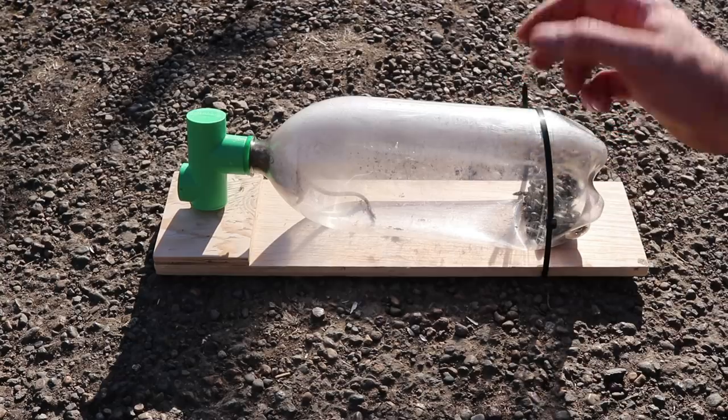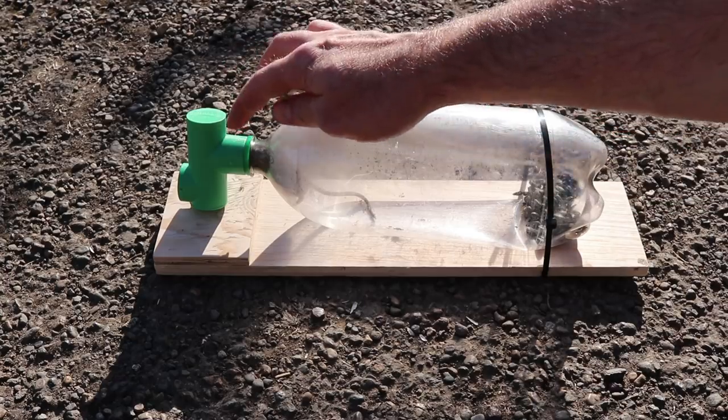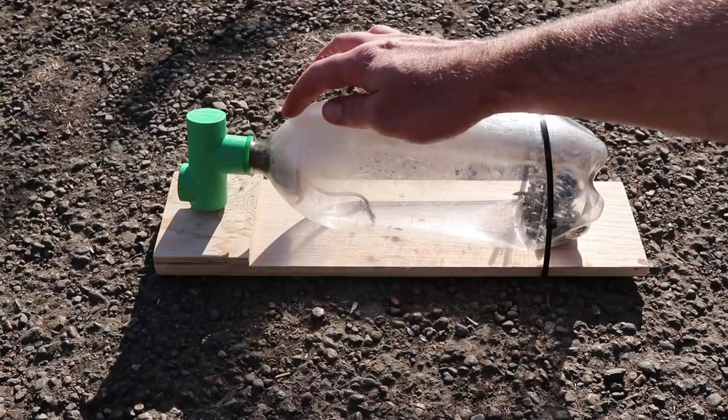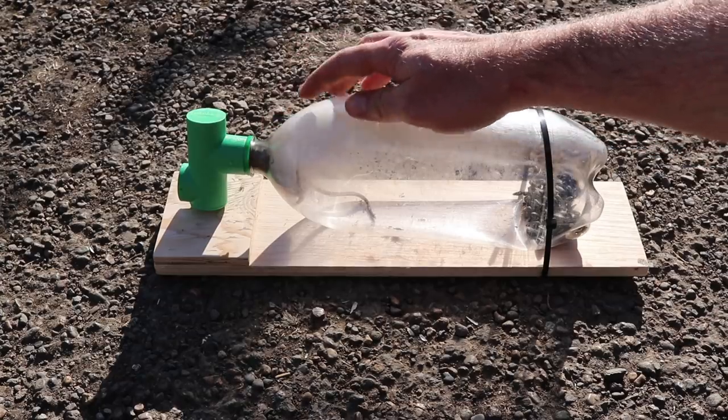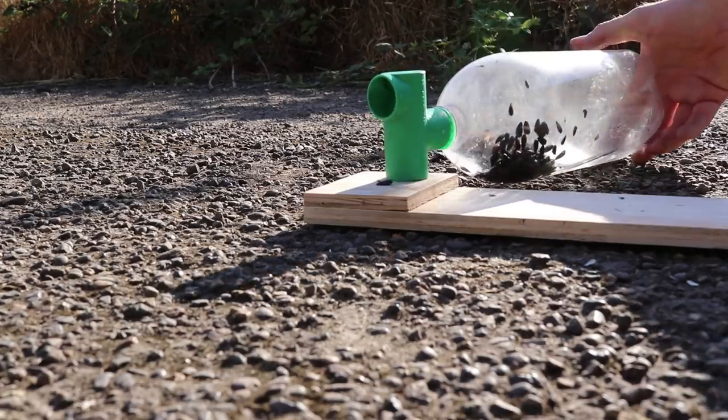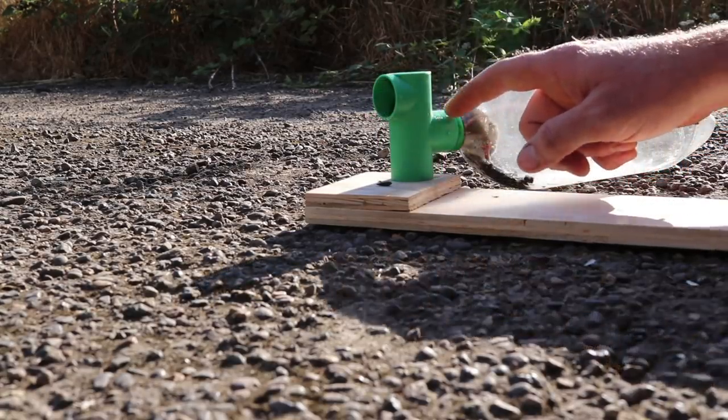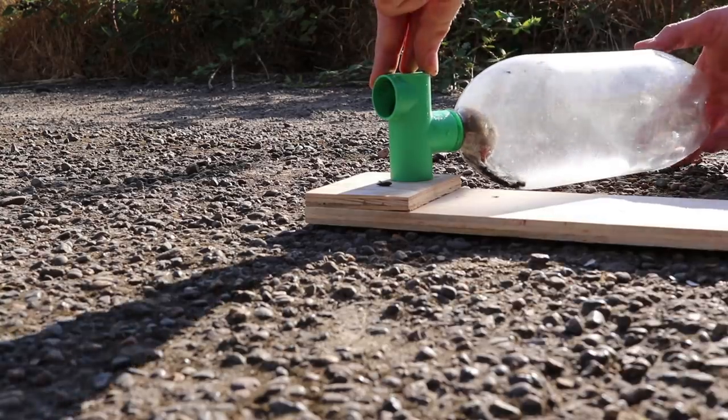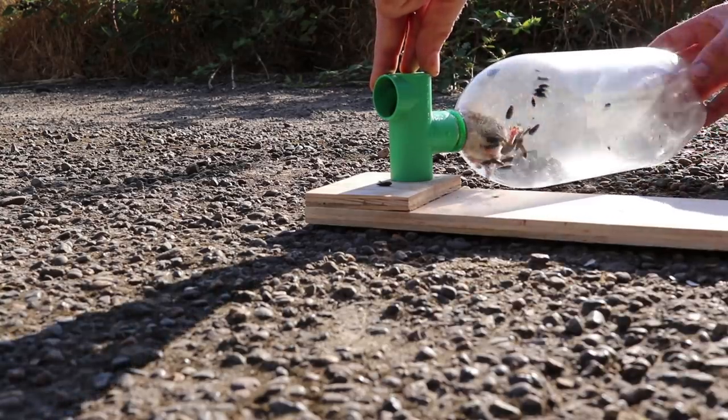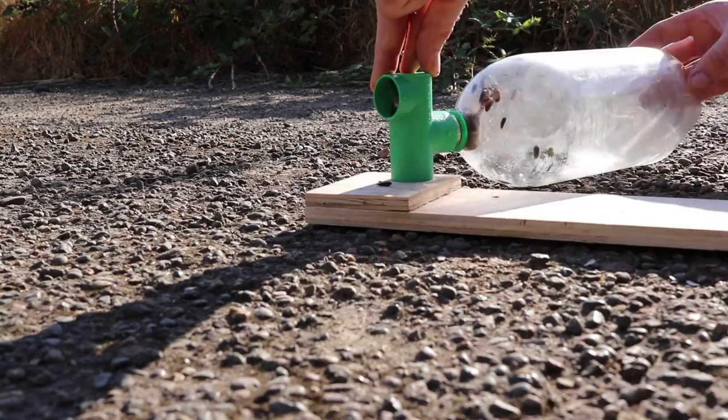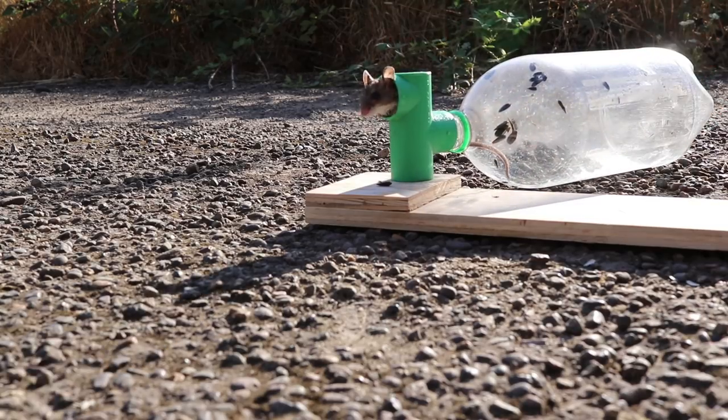To do that I'll just turn the trap upside down, the marble will fall out of the way, and then the mouse can crawl through. He already knows how to get out, he's just waiting. The mouse doesn't want to crawl out so I'll just remove the trap. There he goes.